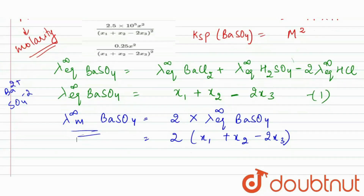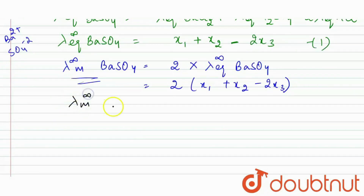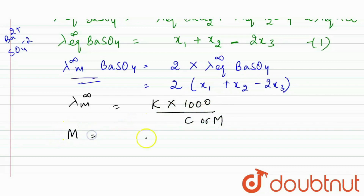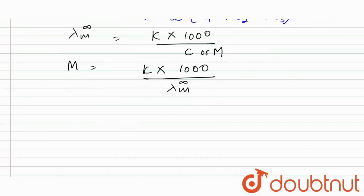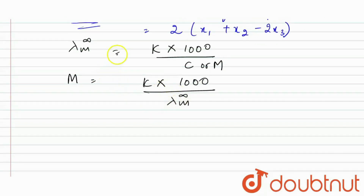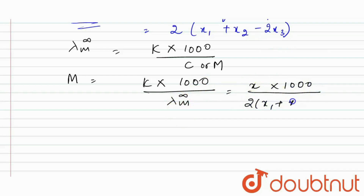Now we know that molar conductivity equals conductivity multiplied by 1000, divided by concentration (molarity). So from here we can calculate the molarity: molarity equals conductivity times 1000 divided by molar conductivity. The conductivity given is x, and the molar conductivity we calculated is 2(x1 + x2 − 2x3). So molarity equals x times 1000 divided by 2(x1 + x2 − 2x3).